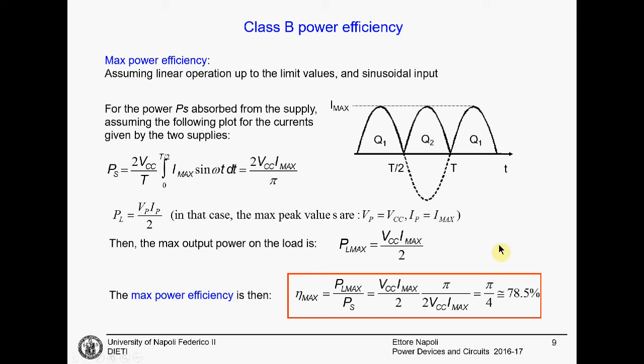We are still very far from what we need for a real power circuit. For a real power circuit, we want more than 90%. Below 90%, you cannot sell anything. And for power circuits, for particular dedicated applications, you can reach as high as 98% of efficiency.